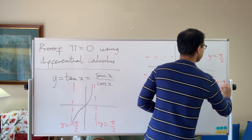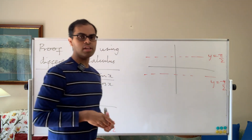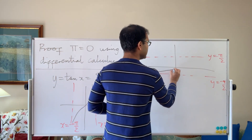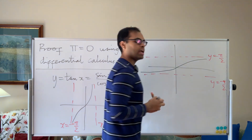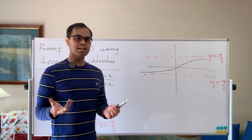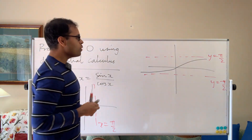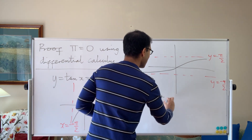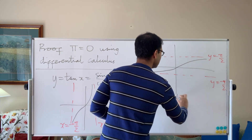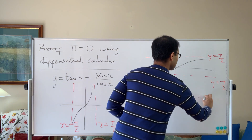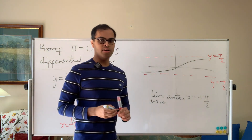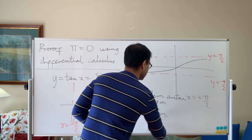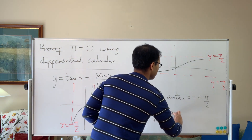If we draw the graph of arctan x, it has the same shape as tan and looks something like this. From the graph, we know that the limit as x goes to infinity of arctan x equals positive pi over two — pi is already coming in here. And the limit as x goes to negative infinity of arctan x equals negative pi over two.